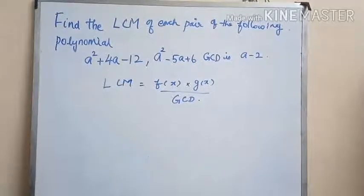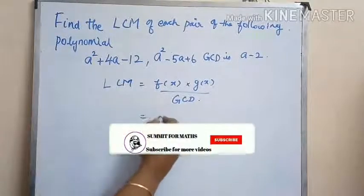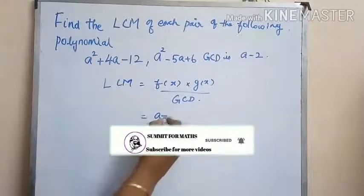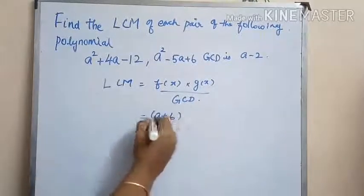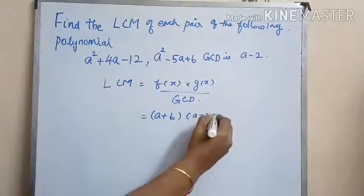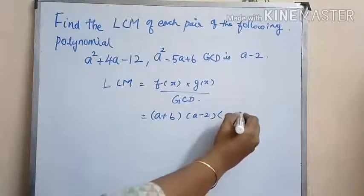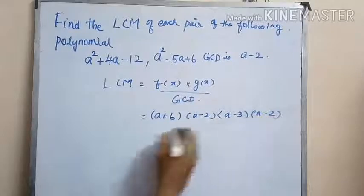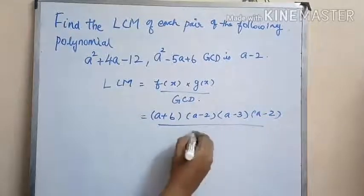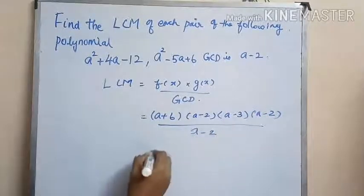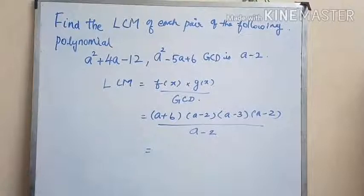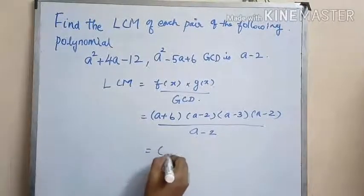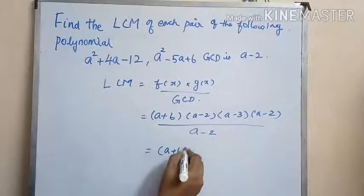Here f(x) is (a plus 6) into (a minus 2), and g(x) is equal to (a minus 3) into (a minus 2), and GCD is (a minus 2). Here (a minus 2) gets cancelled and we have the LCM as (a plus 6) into (a minus 3) into (a minus 2).